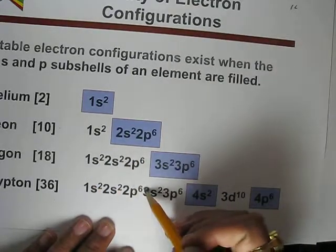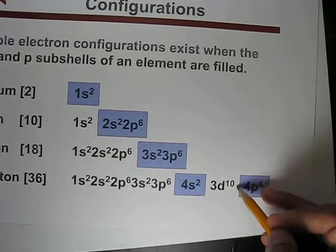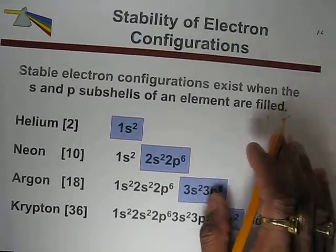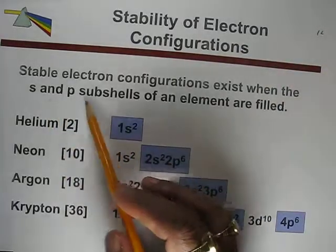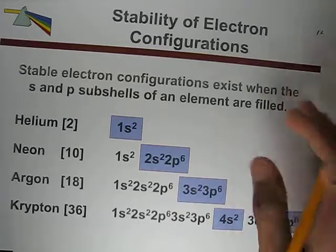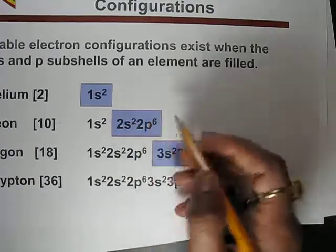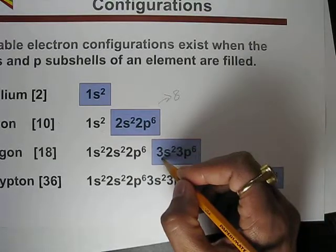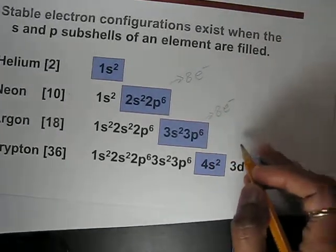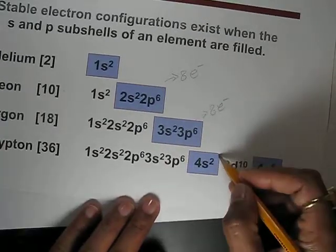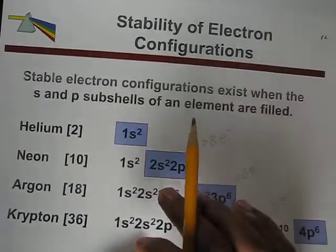Counting krypton's electrons: 2+2+4+6 = 10, then 10+2+6 = 18, then +10+2+6 = 36 total, confirming the configuration. These noble gases have very stable electronic configurations because their s and p subshells are completely filled. The outermost s and p subshells together hold 8 electrons — this is called a complete octet, giving these elements very stable configurations and making them chemically inert.